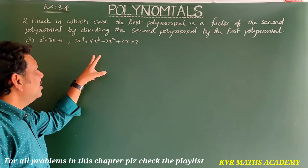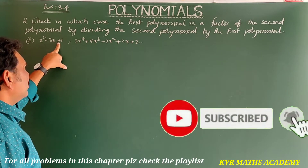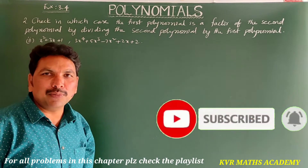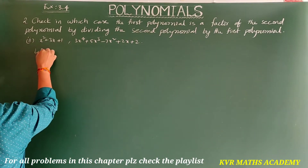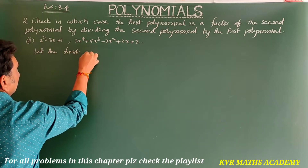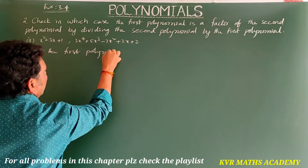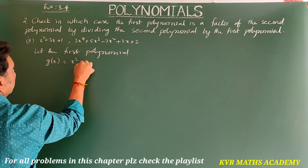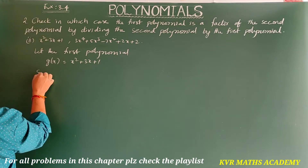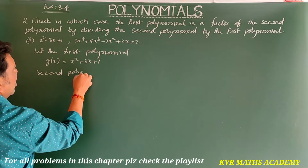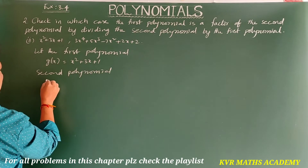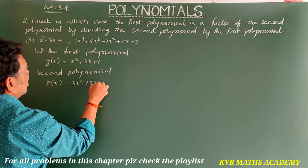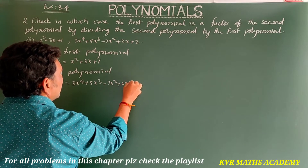Now the second question. The first polynomial is x² + 3x + 1, and the second polynomial is 3x⁴ + 5x³ - 7x² + 2x + 2. Let g(x) = x² + 3x + 1 and p(x) = 3x⁴ + 5x³ - 7x² + 2x + 2.